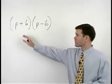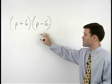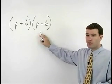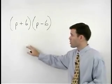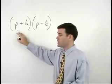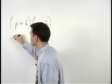To multiply P plus 6 times P minus 6, we will again be using the FOIL method. So take the product of the first terms, P times P, which is P squared.